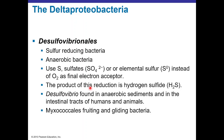Other Delta Proteobacteria like Sulfurimonas can reduce sulfur. These anaerobic bacteria use sulfates or elemental sulfur as the final electron acceptor instead of oxygen, reducing them to hydrogen sulfide — releasing a gas that smells like rotten eggs. Sulfurimonas is found in anaerobic sediments and in the intestinal tract of humans and animals.